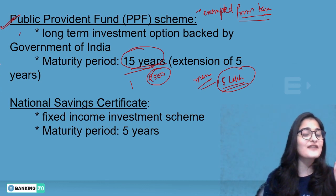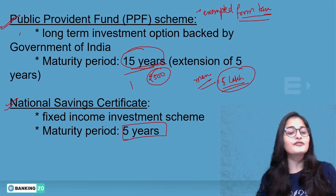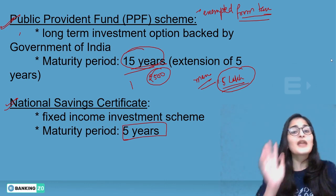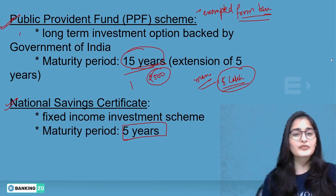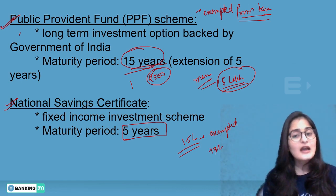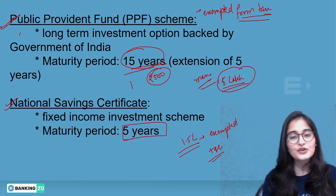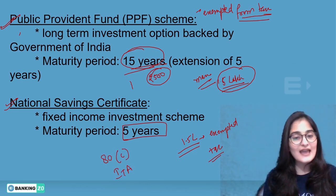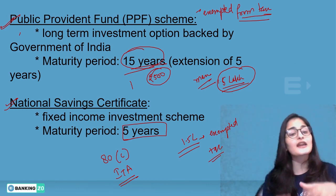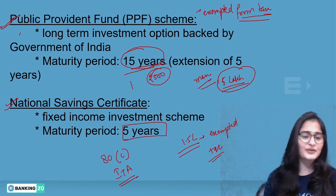National Savings Certificate is a fixed income investment scheme with a maturity period of 5 years. There is no maximum investment limit, but only up to ₹1.5 lakh is exempted from tax. Under Section 80C of the Income Tax Act, investment of more than ₹1.5 lakh in NSC will be counted as taxable income. The current interest rate is 6.8%.